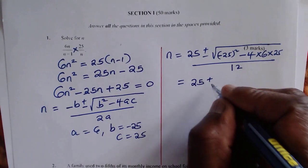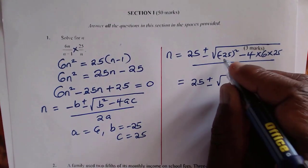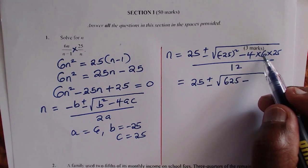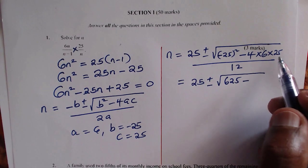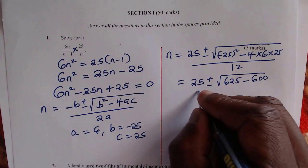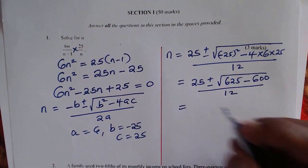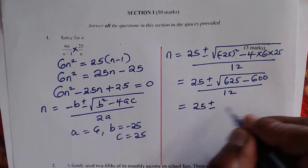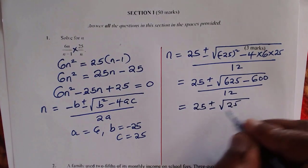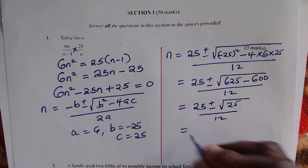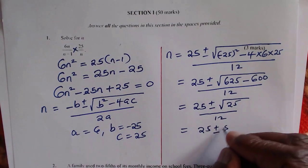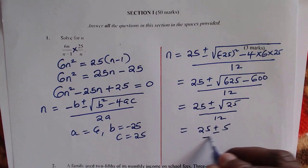Now simplify this, you get 25 plus or minus, so the negative 25 squared will give 625, then when you multiply 4 times 6 times 25, this will give 24 times 25, which will give 600, and then everything divided by 12. We continue, 25 plus or minus, 625 subtract 600, you get 25, everything divided by 12. So working out this further, the square root of 25 will be 5, 25 plus or minus 5 divided by 12.